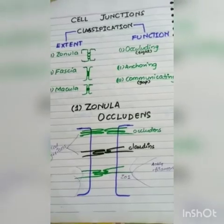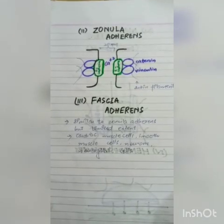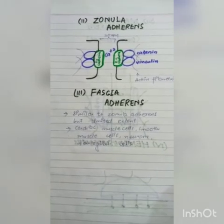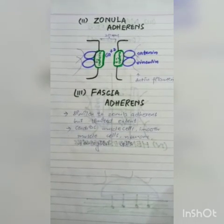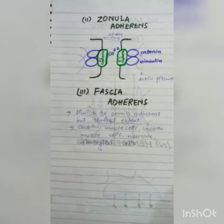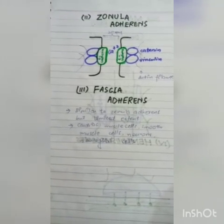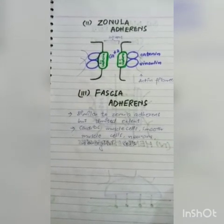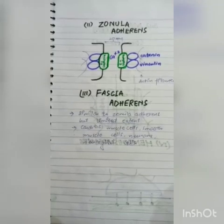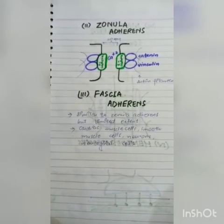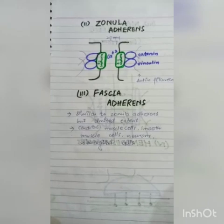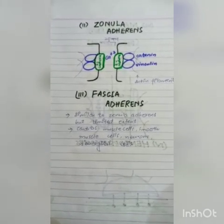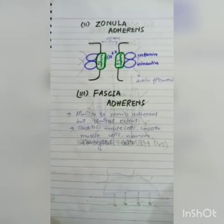The second type is zonula adherens. There is a cadherin family protein called E-cadherin, which is a transmembrane protein. Its extracellular part binds calcium ions and connects to the extracellular matrix. Inside the cell, the proteins catenin and vinculin connect E-cadherin to actin filaments in the cytoplasm. The normal intercellular space here is 20 nm.